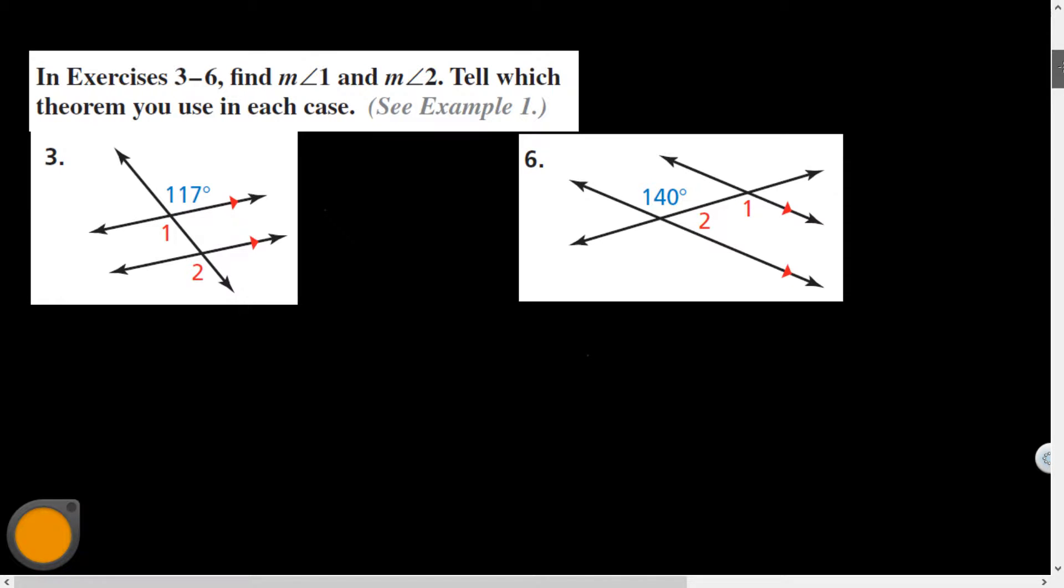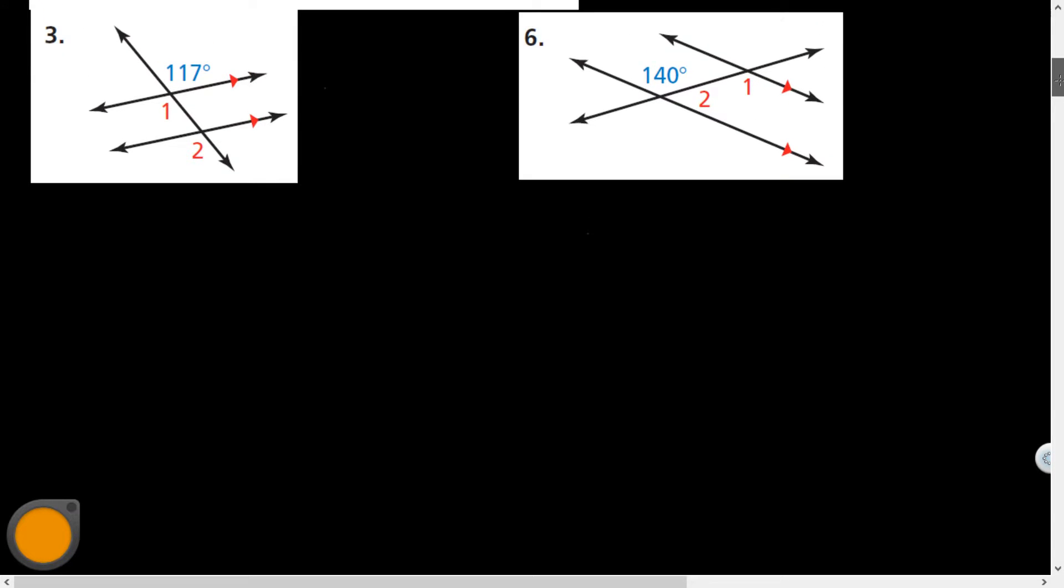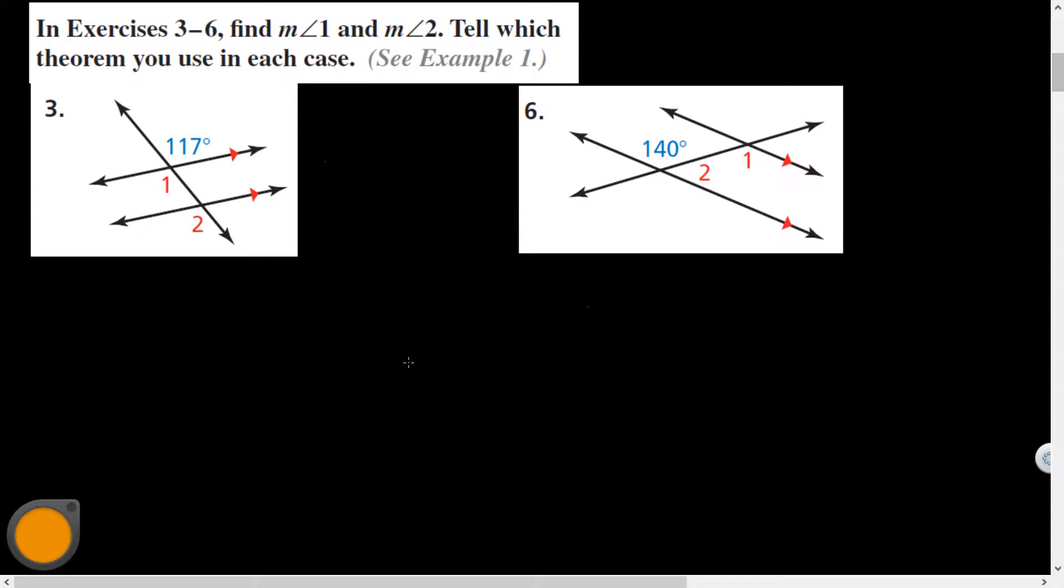In Problems 3 and 6 here, tell which theorem you use when you find the measure of Angle 1 and Angle 2. Alright, so measure of Angle 1 is 117 degrees, right Isaiah?